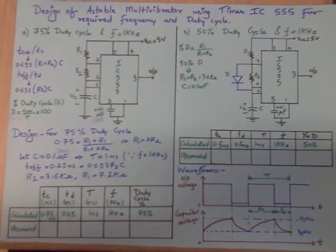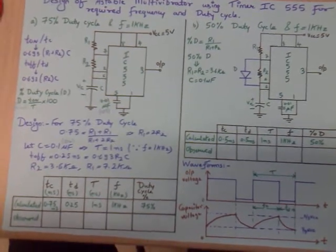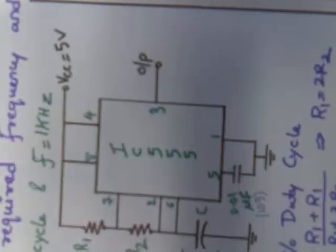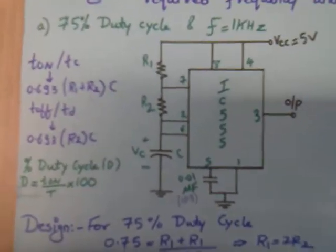Design of an astable multivibrator using timer IC 555 for the required frequency and duty cycle. The circuit diagram for 75% duty cycle and frequency 1 kHz.